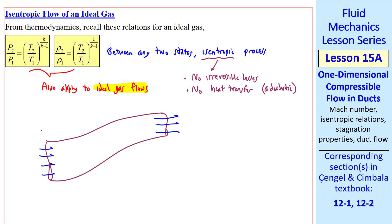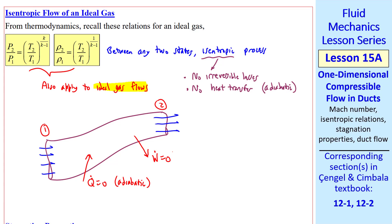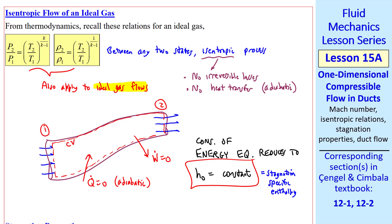For example, consider flow from location 1 to location 2 in some kind of a duct. If there's no heat transfer, the flow is adiabatic, and if W dot is 0, there's no work done. The conservation of energy equation reduces to H0 equal constant, where H0 is the stagnation specific enthalpy. For our control volume, H1 plus 1/2 V1 squared equals H2 plus 1/2 V2 squared. This equation is true even if the flow is not isentropic, but since the flow is adiabatic, the energy equation reduces to this simplified form.